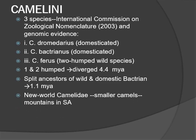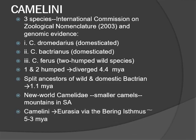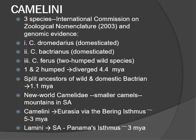The New World Camelini are smaller versions of the camels and live in the heights of mountains in South America. The modern camel's tribe Camelini and Lamini diverged from one another about 17 million years ago. The Camelini had reached Eurasia via the Bering Isthmus about 5 to 3 million years ago, whereas Lamini dispersed to South America via Panama's Isthmus about 3 million years ago.